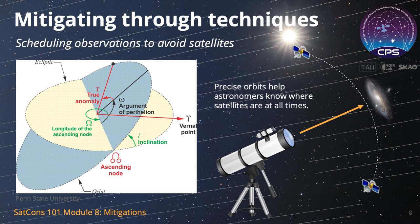One of these techniques involves carefully scheduling observations. Telescopes that see small parts of the night sky at once can avoid looking in directions where satellites will be at a given time. This requires knowing very accurately where satellites are in space. Satellite operators can help by providing this information early after launch.